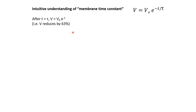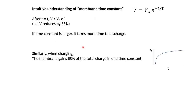If τ is larger, it would take more time for the membrane to discharge; if τ is smaller, it will take less time. So τ basically indicates how much time it takes for the membrane to charge or discharge. Although we have not derived the equation for charging, charging also follows a similar behavior — it is just the mirror image of discharging. Discharging goes like this, charging goes like this, just a mirror image across the horizontal axis. Here also, τ indicates how much time it takes for the membrane to reach 63% of its final charge.